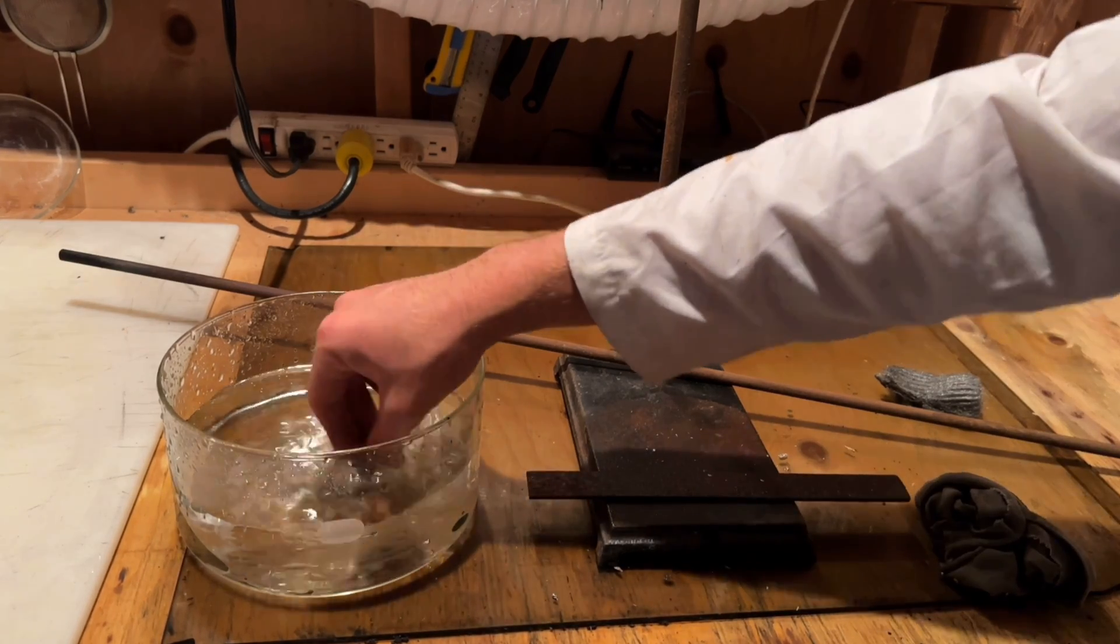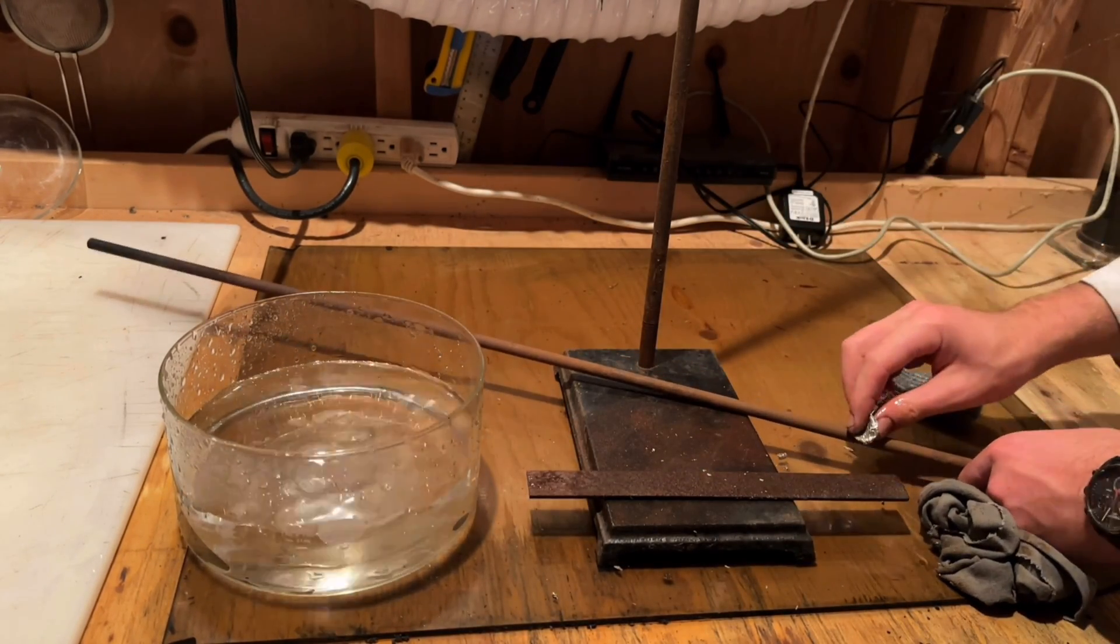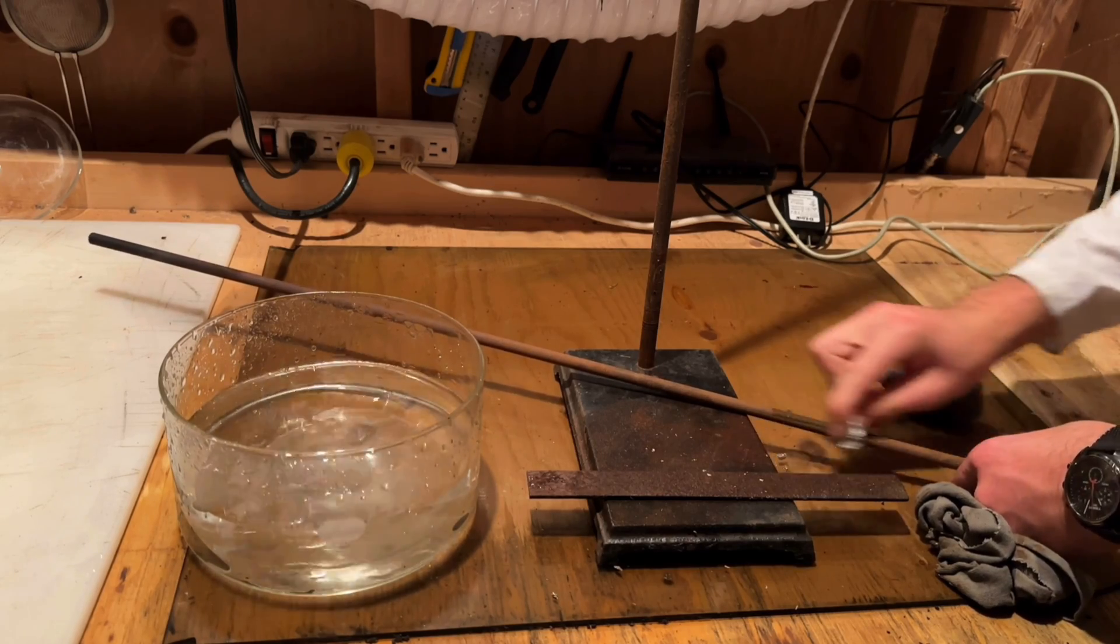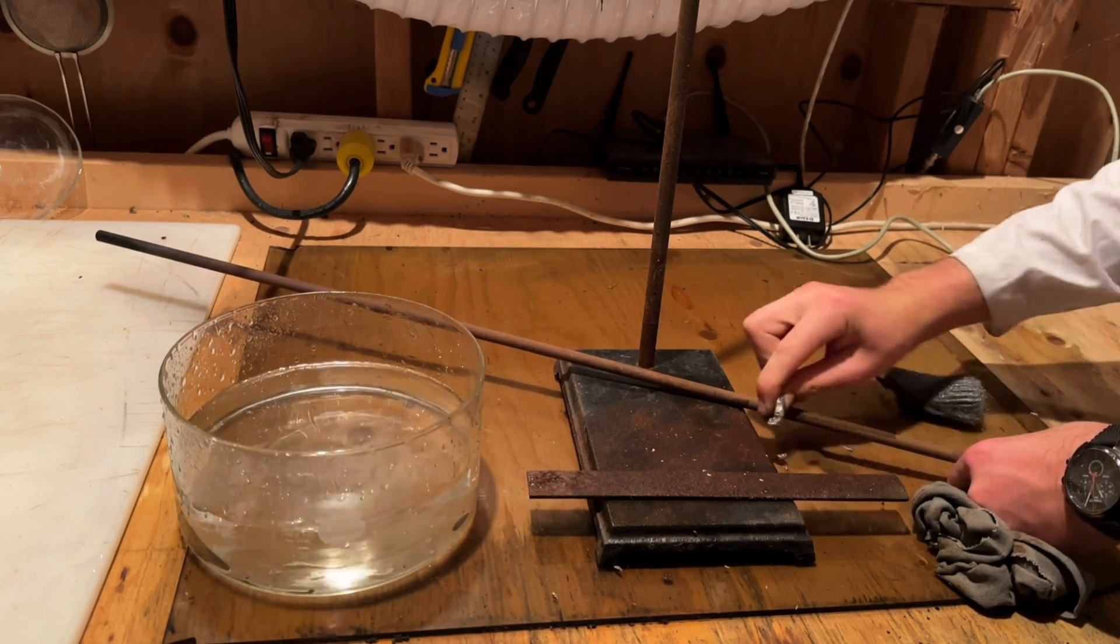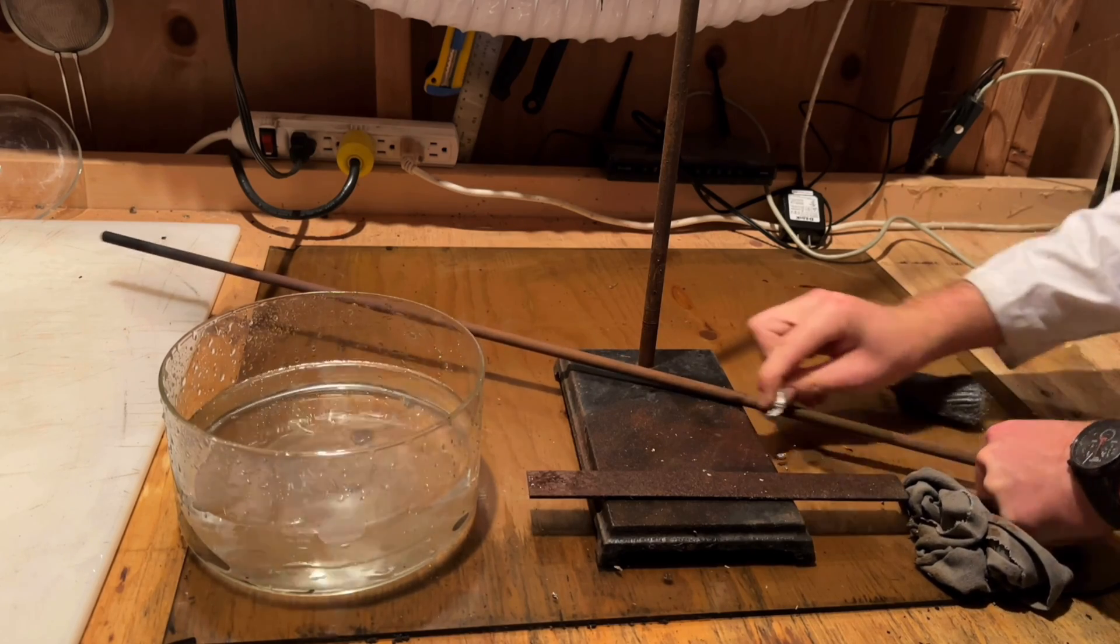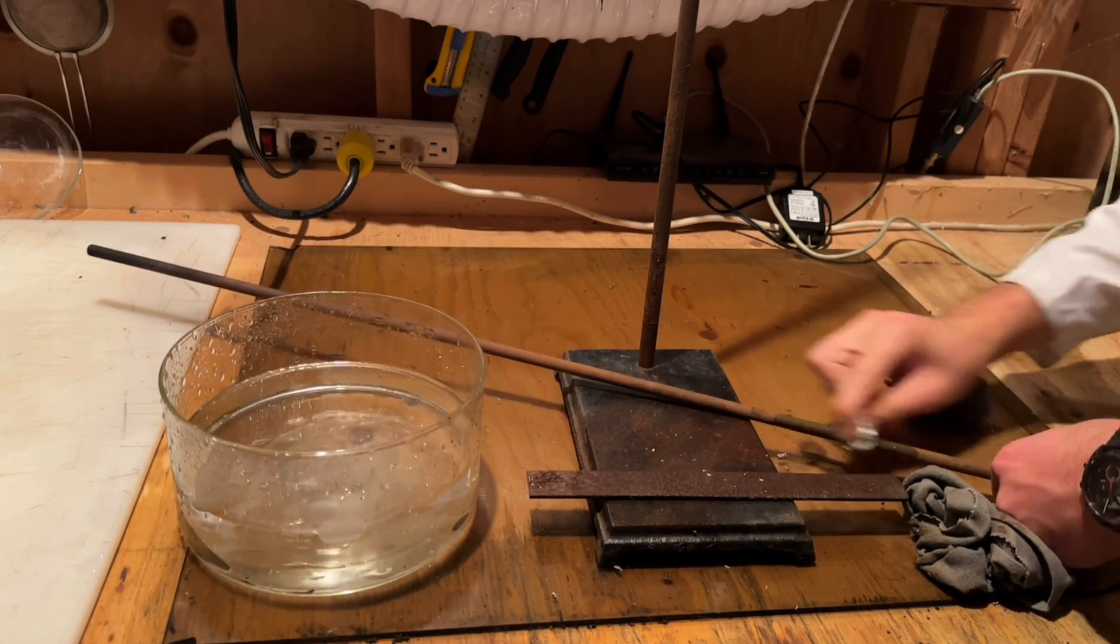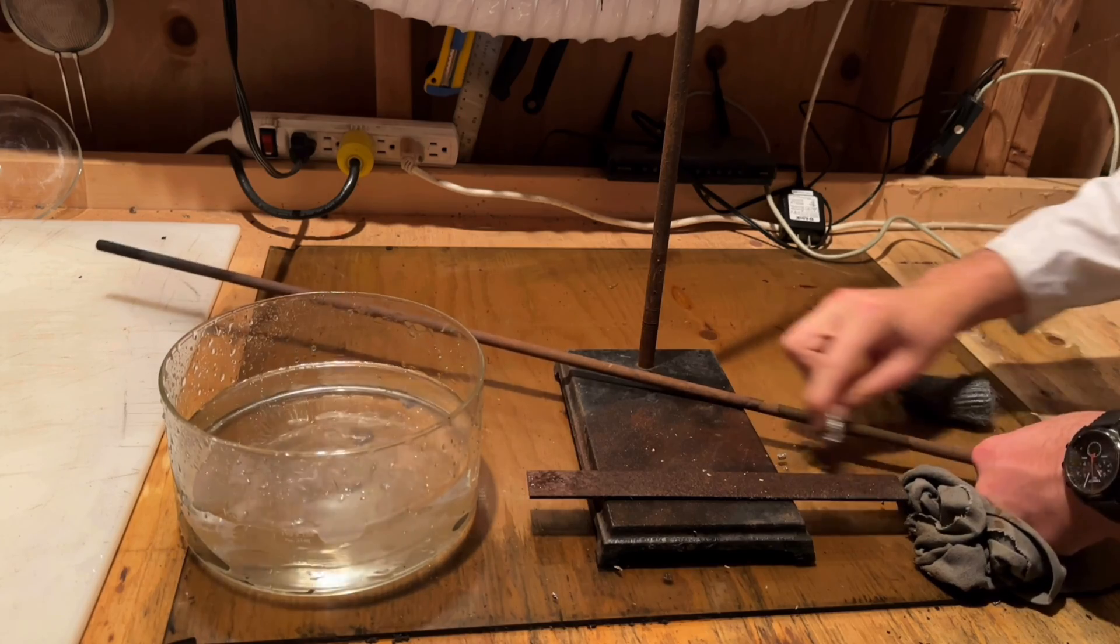To begin we'll start by wetting the aluminum foil and then scrub the rust while applying pressure. If the object has a particularly thick layer of rust it may be best to use steel wool first as it is a stronger abrasive and then finish it off with aluminum foil.